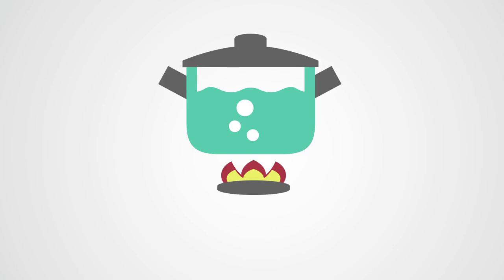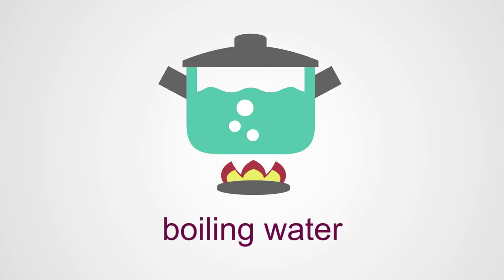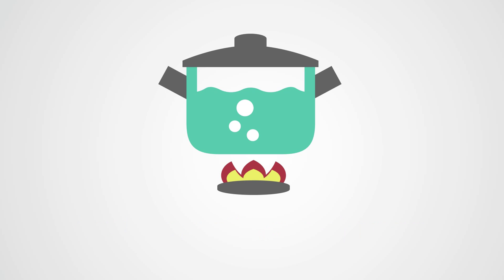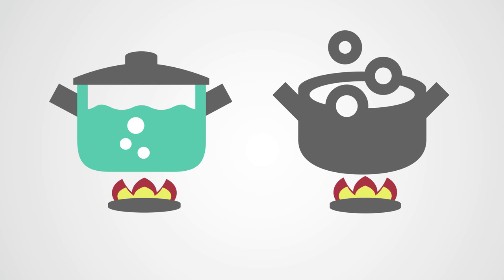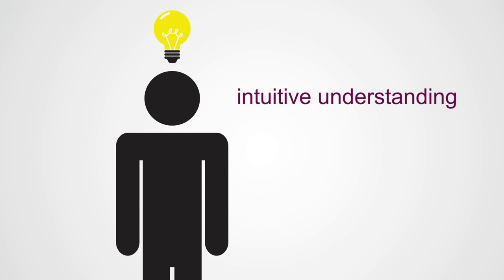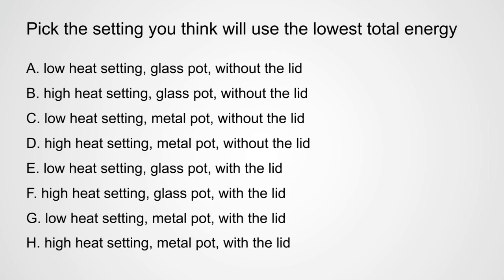The small things in life matter. Let's take a look at boiling water, something we've all done before. The aim with this experiment is to find the setting that uses the lowest total energy. And because energy equals dollars, we want to reduce energy consumed as far as possible. For our experiment we have two pots — a glass pot and a metal pot. We have electrical heat which we can adjust to a low or a high setting, and we can use the lid or leave the pot open. So we have several combinations, and here's a quiz that shows them. Take a look at the options and pick the setting you think will have the lowest total energy.